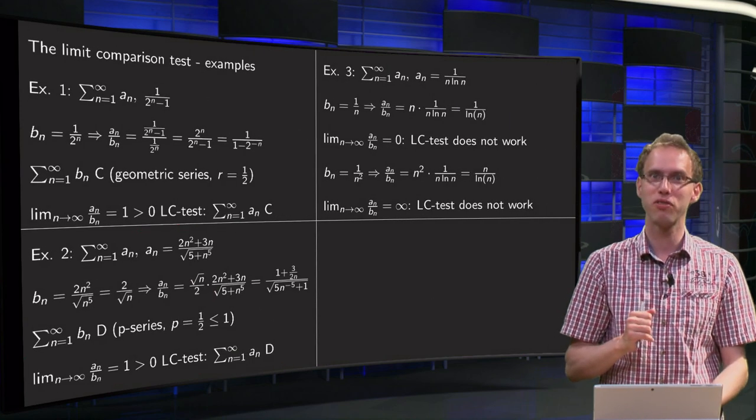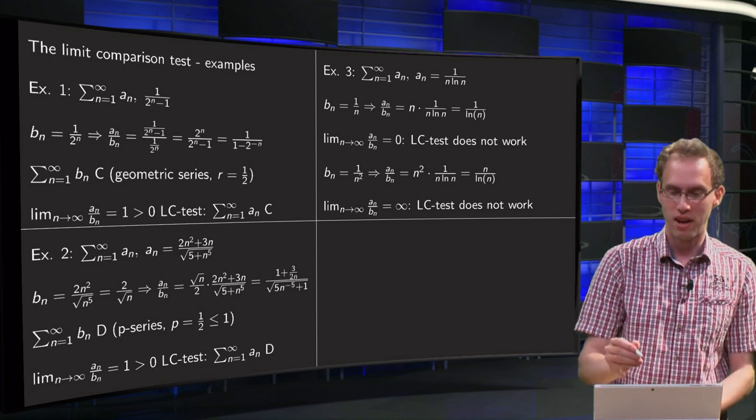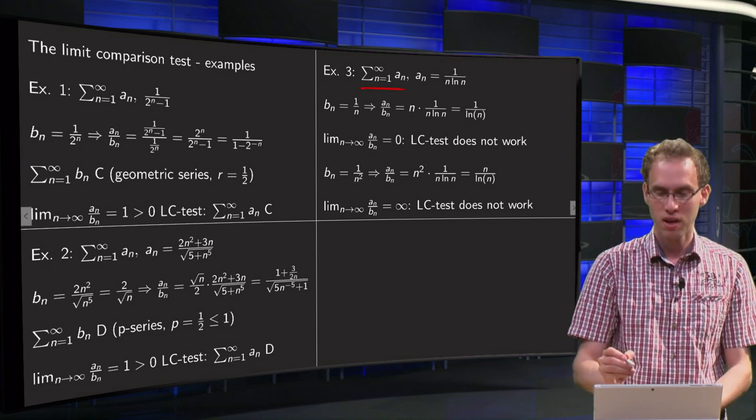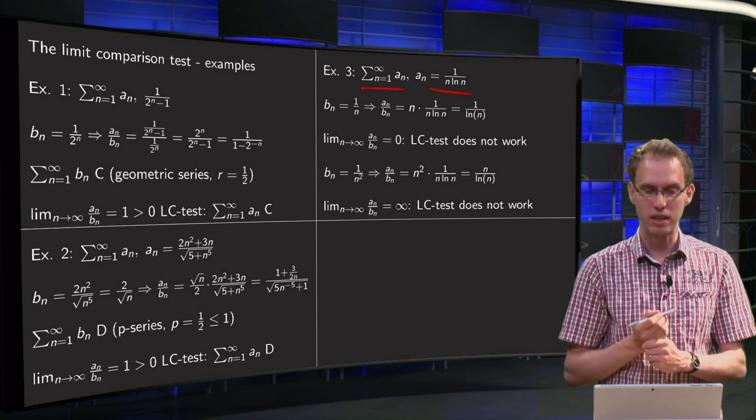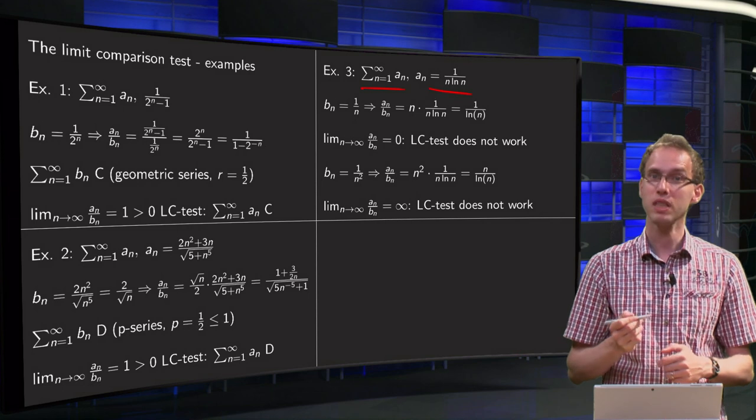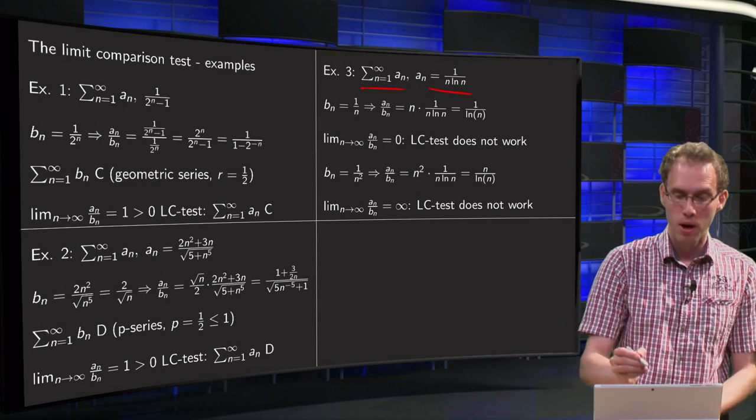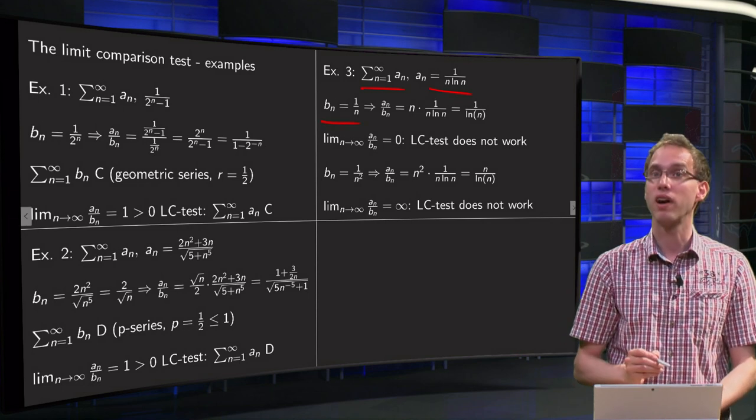Let's go to example 3, the famous one. Sum n from 1 to infinity, an equals 1 over n times ln of n plus 1. So what can we do? We can try bn equals 1 over n.